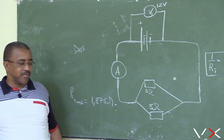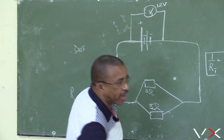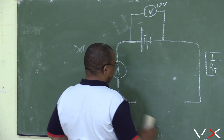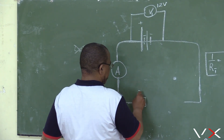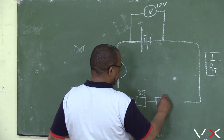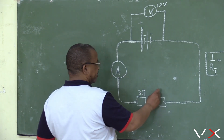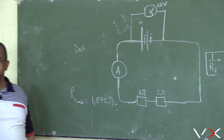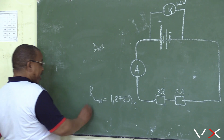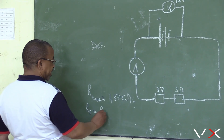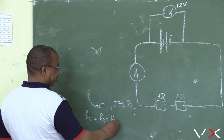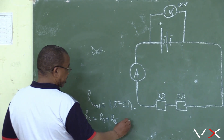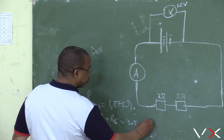What if you have three ohms and five in series? Come in parallel - one three, one five. Three and five come in series. R series is R3 plus R5. That will be three plus five, which is eight ohms.